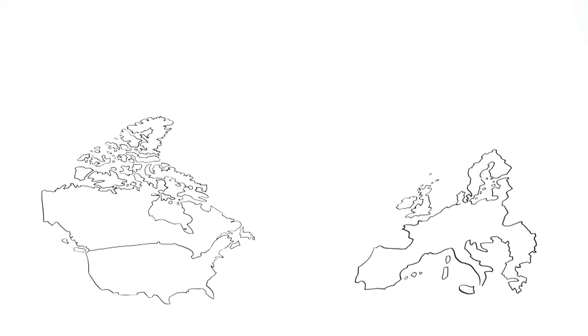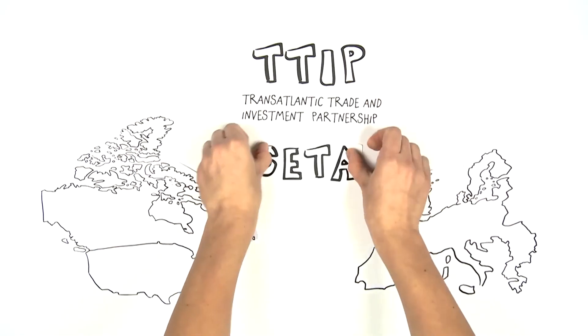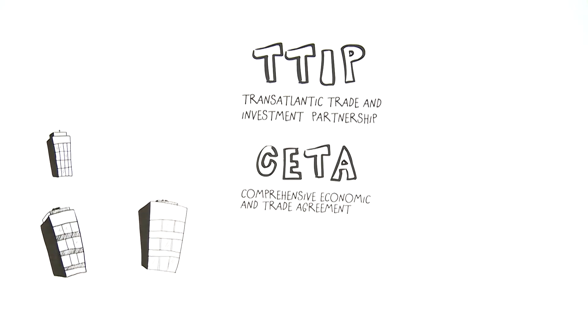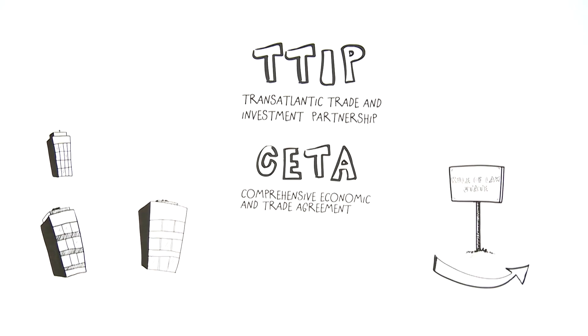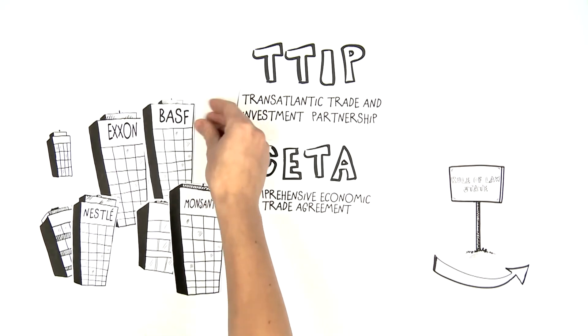Lawsuits of this kind will occur ever more frequently if the planned agreement with the USA and Canada enters into force. These two agreements alone would allow more than 100,000 companies to circumvent our constitutional democracy. This includes many of the world's largest corporations such as Monsanto, Exxon, Nestle, and BASF.